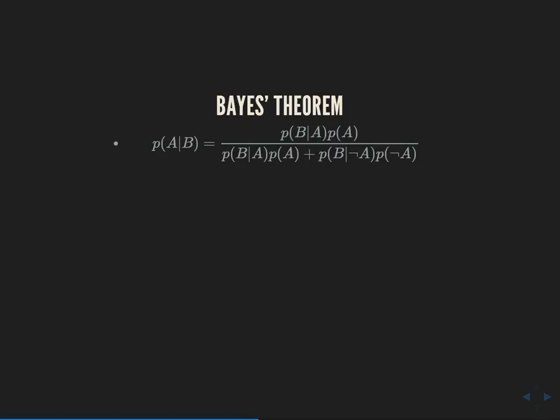To figure this out, we turn to Bayes' theorem — a really powerful theorem in probability. The high-level idea is it does two things: first, it lets you take an existing belief about how likely something is and update that belief to reflect new information in a sensible way. Second, it lets you reverse conditional probability. The pipe notation P(A|B) means 'how likely is A given that I know B.' On the left-hand side we have P(werewolf | votes), and on the right-hand side we have the P(votes | werewolf) terms. We're flipping the conditions to find what we want to know.